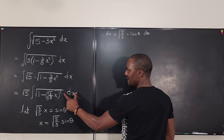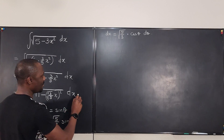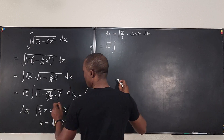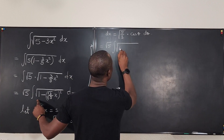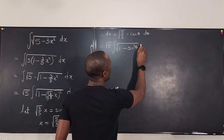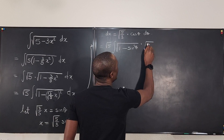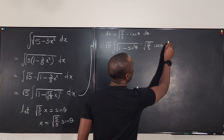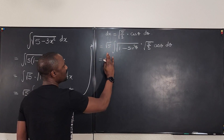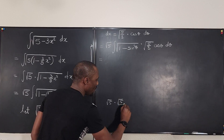So going back, I need dx, and I already have dx. So this integral can be written as: the square root of 5 times the integral of the square root of 1 minus sine squared theta — because that expression equals sine theta — times dx. But dx is the square root of 5 over 3 cosine theta d theta. Let's simplify: this can come out so that we have the square root of 5 times the square root of 5 over 3, which is square root of 5 times square root of 5 over square root of 3.